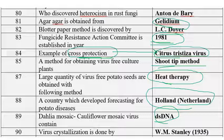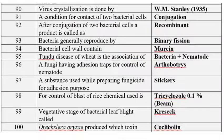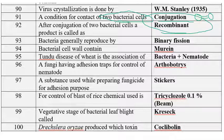Virus crystallization was done by W.M. Stanley in 1935. He used ammonium sulfate for the crystallization of a plant virus — ammonium sulfate is also used for the purification of a virus. Conjugation is the condition where two bacterial cells come into contact with the help of sex pili; after conjugation the product is the recombinant. Most bacteria reproduce by means of binary fission.